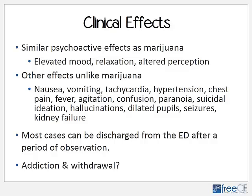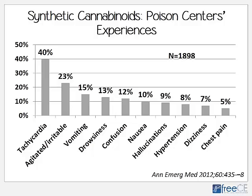There is probably some psychological addiction with these products, as there is some craving associated with their use. Data pooled from a number of poison centers across 1,898 patients between January 2010 and October 2010 found that 40% had tachycardia, 23% were agitated and irritable, 15% had vomiting, 13% had drowsiness, 12% had confusion, and others had nausea, hallucinations, hypertension, dizziness, and chest pain. Tachycardia and agitation were the top effects reported in these patients.